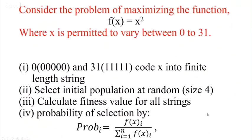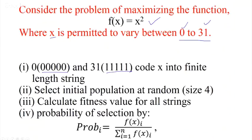Let us take a very simple problem and solve it step by step. We have a maximization problem: f(x) = x², where x is between 0 and 31. I have to find the maximum value of f(x). Since I'm solving it on a computer, I put it as a binary string — 0 is represented as 00000 and 31 is represented as 11111. These are my solutions. From all the combinations from 00000 to 11111, I randomly select an initial population of four.